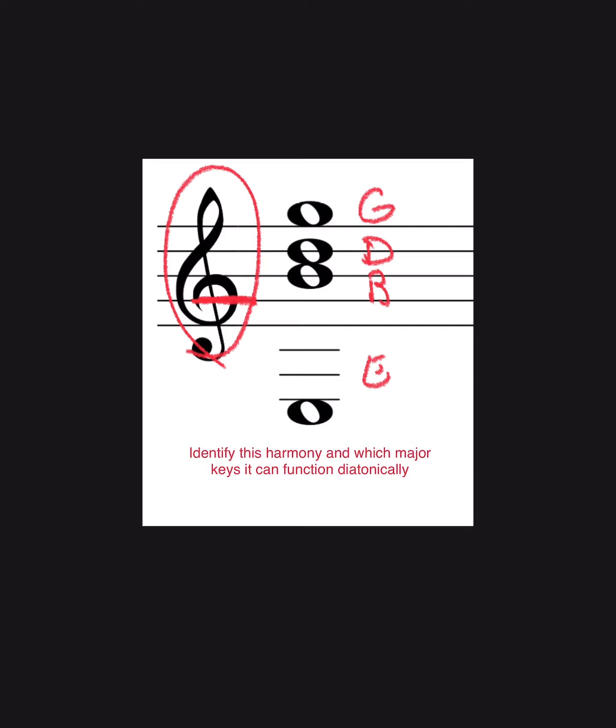Now in order to figure out the chord, we need to stack the notes into thirds. And the only way you can do that with these four notes is to label it as some kind of an E chord: E, G, B, and then D.